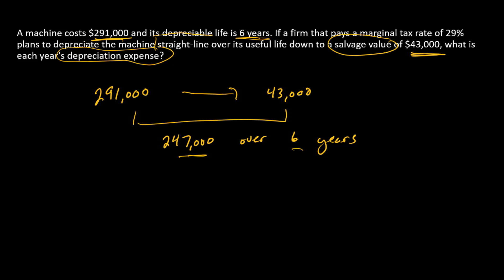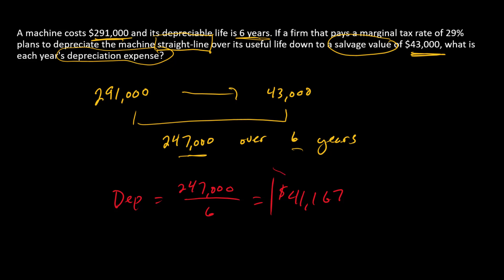Here is a very popular method: straight-line, which simply means equal amounts each year. The calculation is straightforward — the depreciation each year is simply the total amount to depreciate divided by the number of years, and we get $41,167 per year. That is the depreciation expense each year.